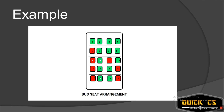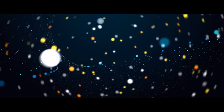Two users shouldn't be able to book one single seat in the name of two different users. This is known as concurrency control and this is the fourth characteristic of the database approach.